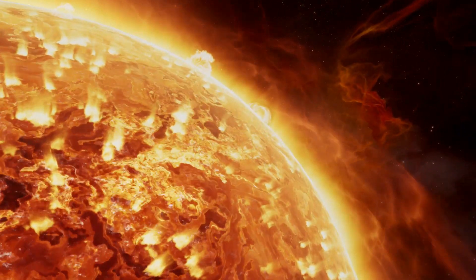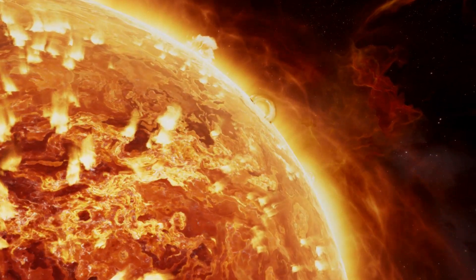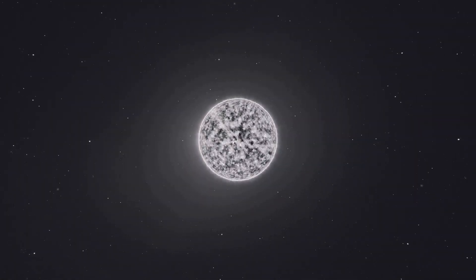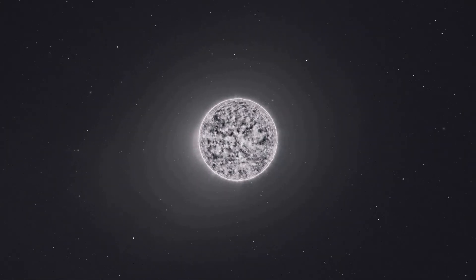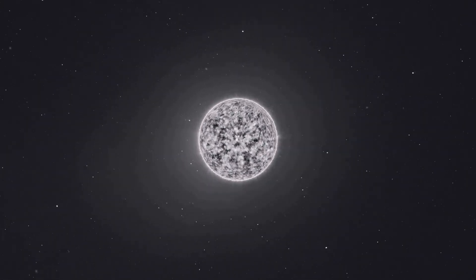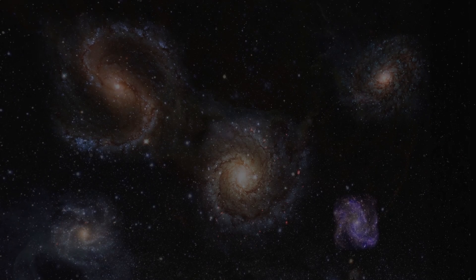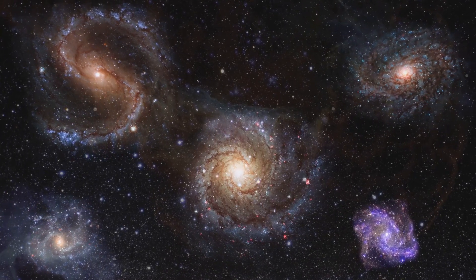As stars age, they go through various stages, some expanding into red giants, others collapsing into white dwarfs. But ultimately, their light diminishes, and they fade into the cosmic backdrop. The universe is expanding, and as it does, the distances between galaxies grow larger.